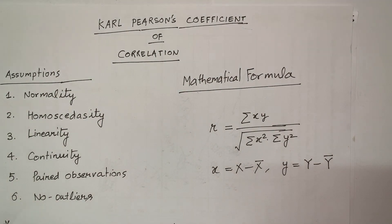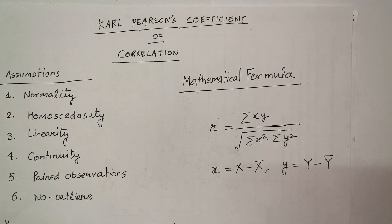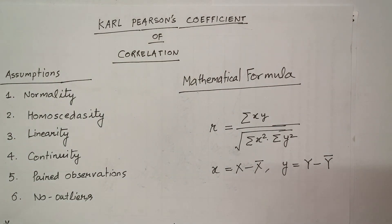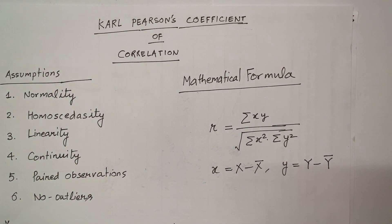This coefficient of correlation is going to measure the strength or degree of correlation, and it will also determine the direction of movement of the variables together. You logically establish the relationship first — that's step one — then Karl Pearson's coefficient of correlation tells you exactly what degree of strength lies in that logically established relationship.